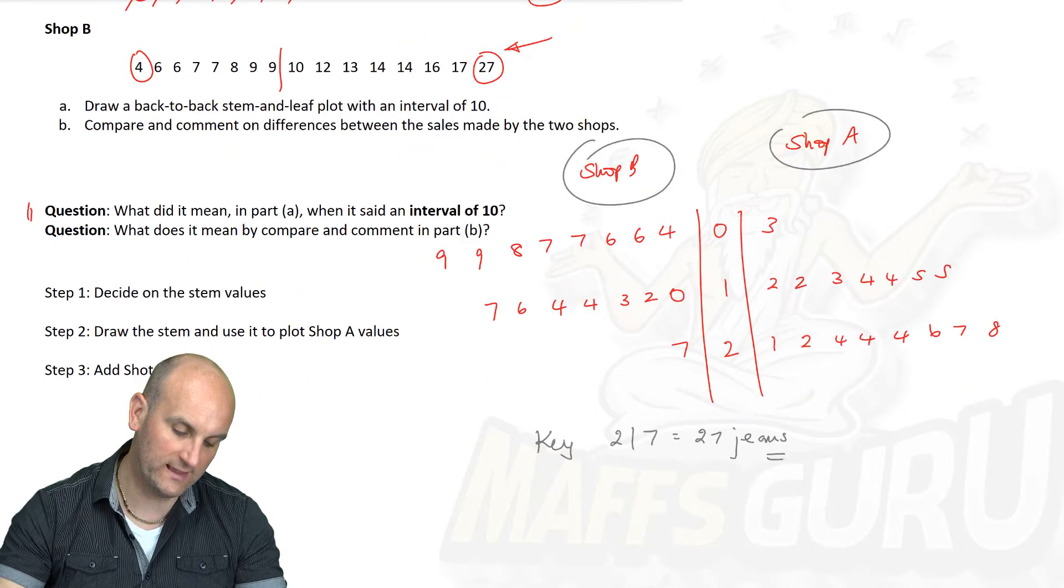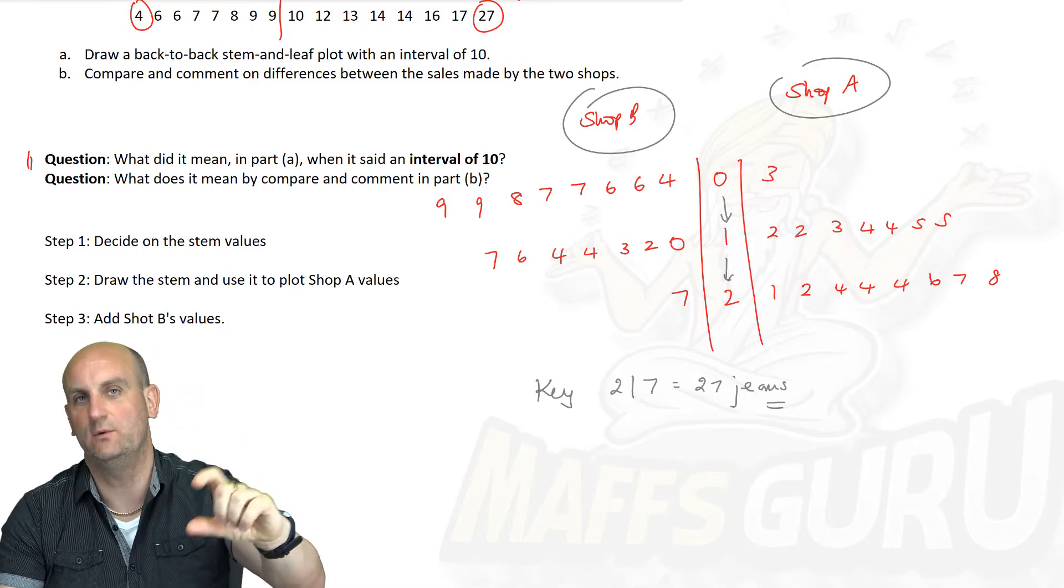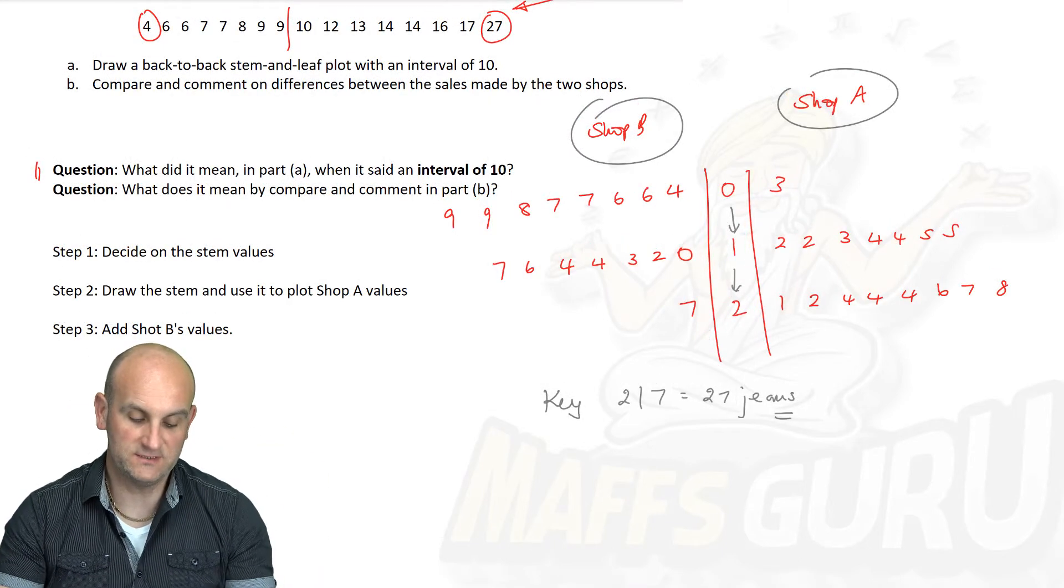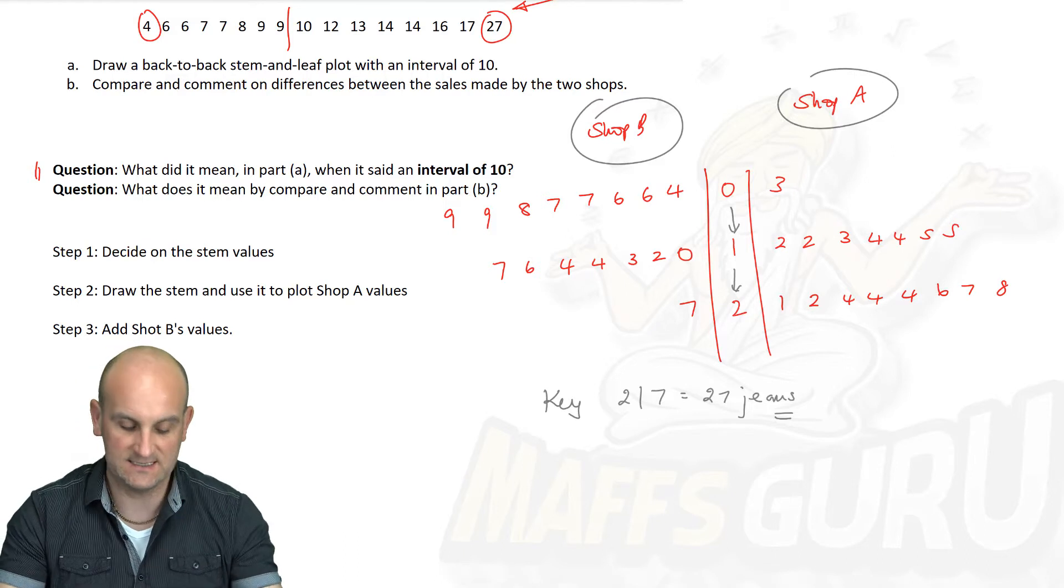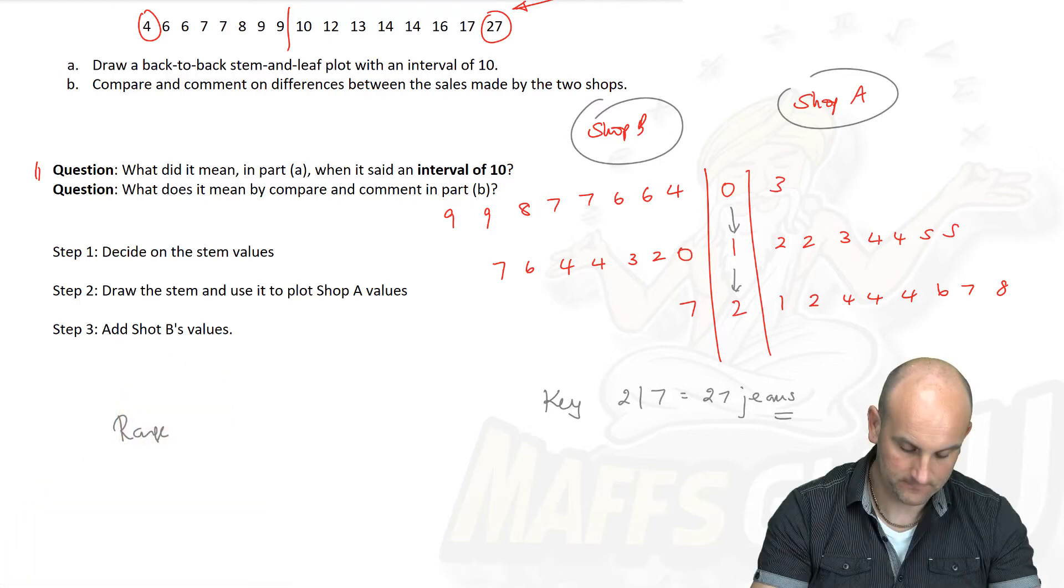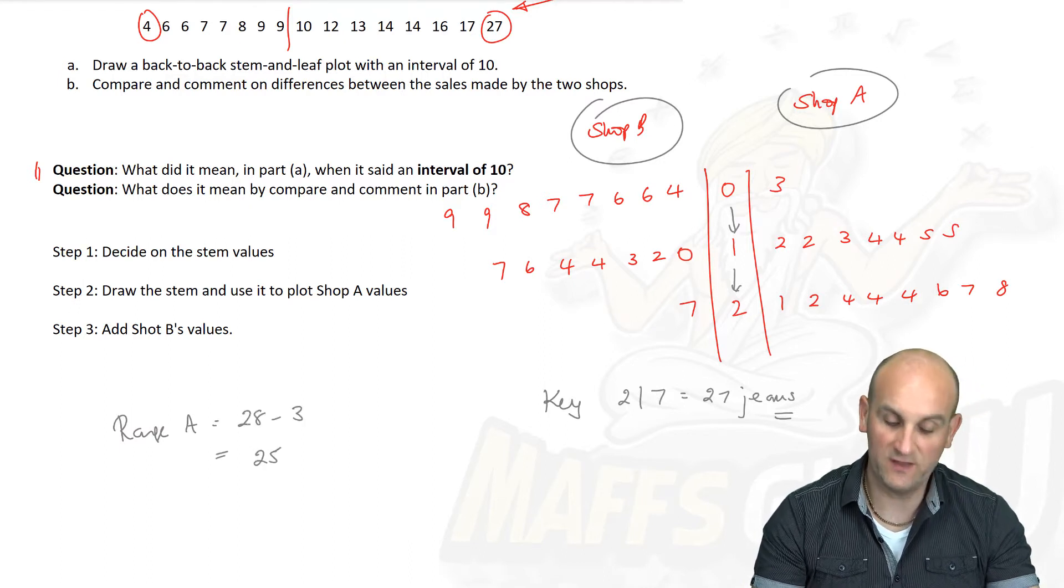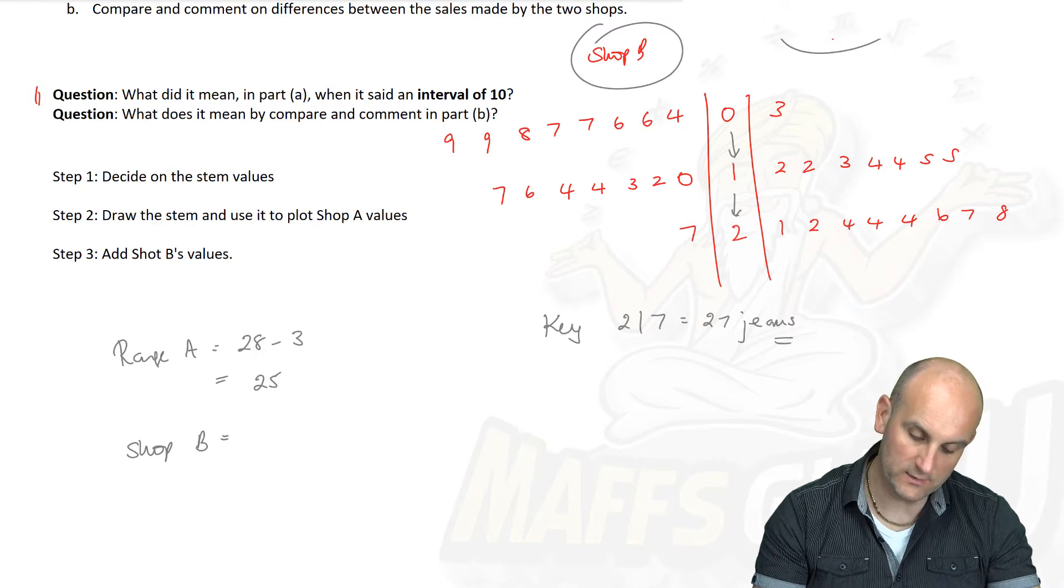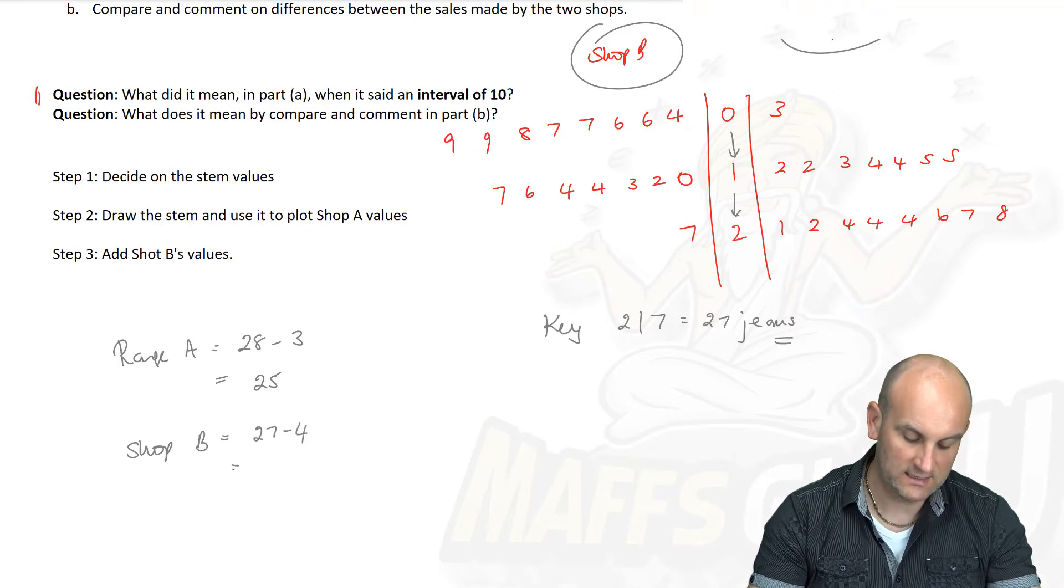So draw it. We've done that interval of 10. Do you notice these numbers were effectively standing with gaps an interval of 10. 0 to 9, 10 to 19, 20 to 29. What does it mean by compare and comment on differences between the sales made by the two shops? It wants you to look and say, let's pull out some key data. The range from shop A was equal to the biggest number, which is 28, minus the smallest number, which is 3, which is 25 pairs of jeans. What about my range for shop B?